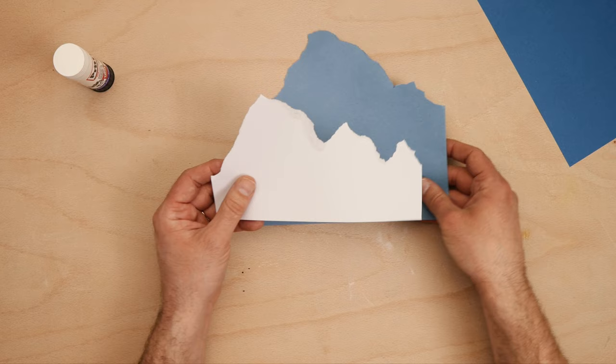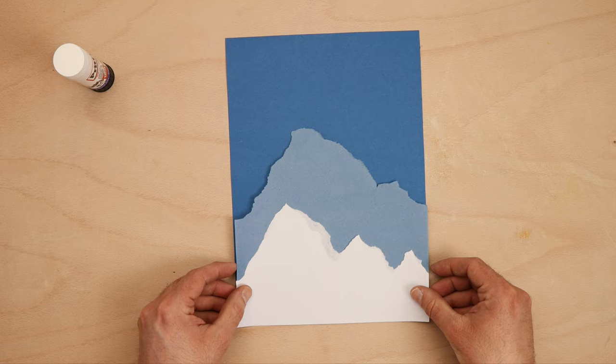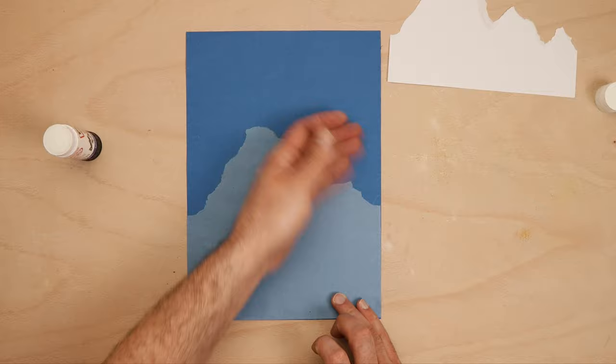Put the white piece on top of the light blue paper, and then put them both on top of the dark blue paper, making sure they line up at the bottom. Once you're happy, glue them down.